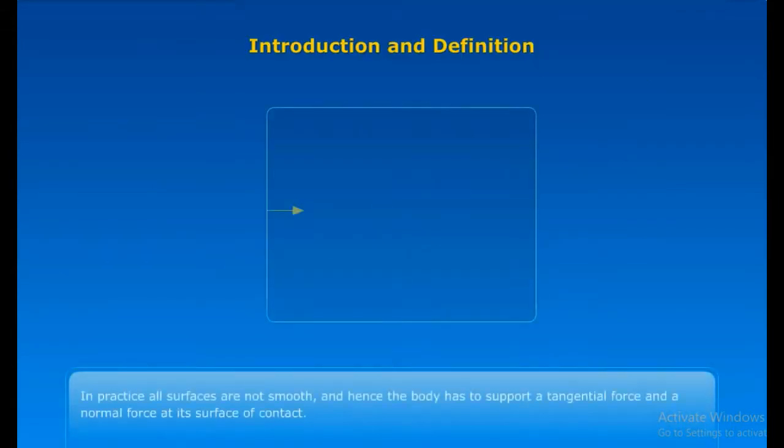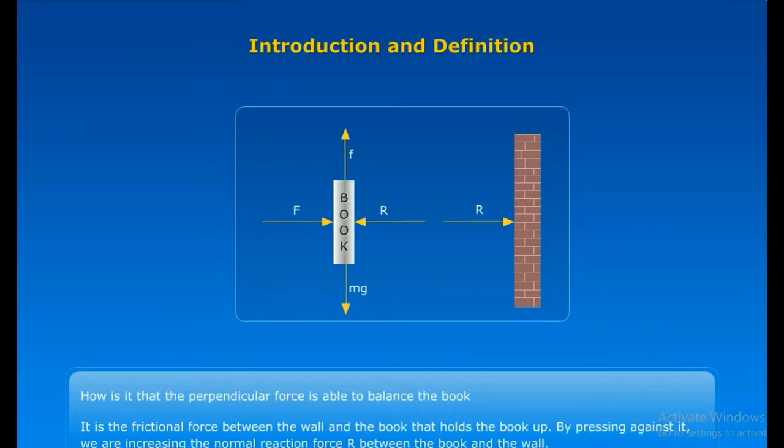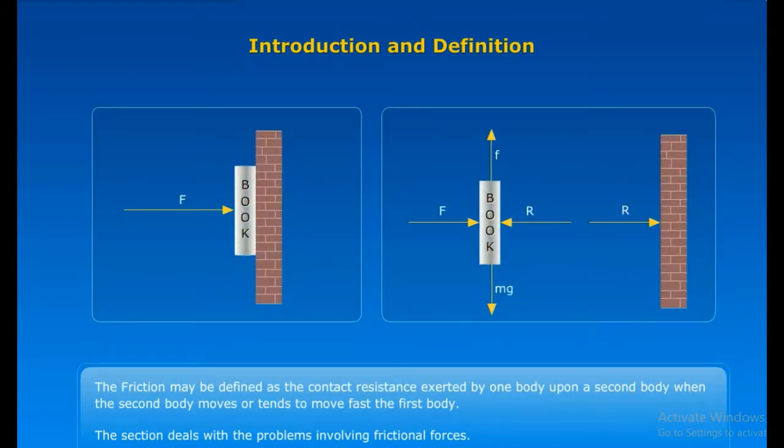Introduction and Definition of Friction. In practice, all surfaces are not smooth and hence the body has to support a tangential force and a normal force at its surface of contact. How is it that the perpendicular force is able to balance the book? It is the frictional force between the wall and the book that holds a book up. By pressing against it, we are increasing the normal reaction force R between the book and the wall. The friction may be defined as the contact resistance exerted by one body upon a second body when the second body moves or tends to move past the first body. This section deals with problems involving frictional forces.